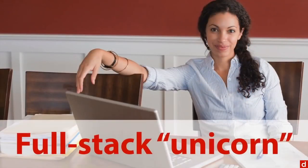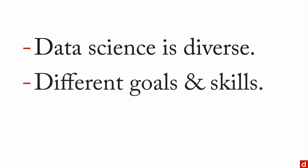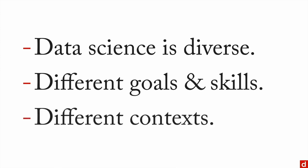In data science, there's something known as the full stack unicorn: a person who can do everything at an expert level. They're called a unicorn because they may not actually exist. In sum: data science is diverse. There are a lot of different people who go into it with different goals, different skills, different experiences, and different approaches. They work in very different contexts — an entrepreneur works very differently from a business manager or an academic researcher — but all are connected to data science and make it a richer field.